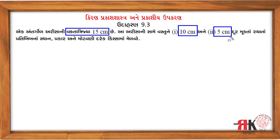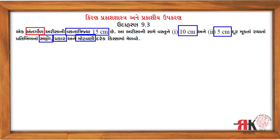ઑબ્જેક્ટ 25 સેન્ટિમિટર દૂર મૂકીએ તો રચાતા પ્રતિબિંબ, એના સ્થાન, એનું પ્રકાર અને મોટાવણી - એ દરેક માટે આપણને અંતર ગોળારિશ (concave mirror) ના કિસ્સામાં, એની વક્રતા ત્રિજ્યા આધારે ઉકેલ કરીશું.